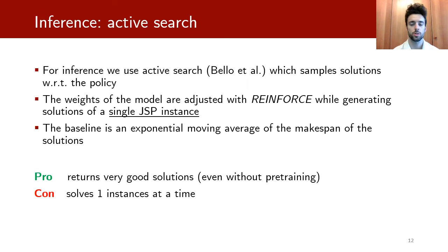For inference we use active search, which is a method first introduced by Bello et al. This method samples solutions with respect to the policy. The policy is updated through REINFORCE while generating solutions on a single JSP instance. So the model is effectively fine-tuned on a single JSP instance and at every step a better solution can be found. The method uses a baseline that is an exponential moving average to reduce the variance. The model returns very good solutions with active search even without pre-training as mentioned in the original paper by Bello.